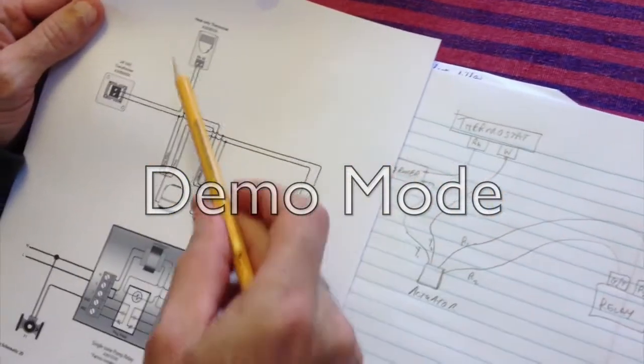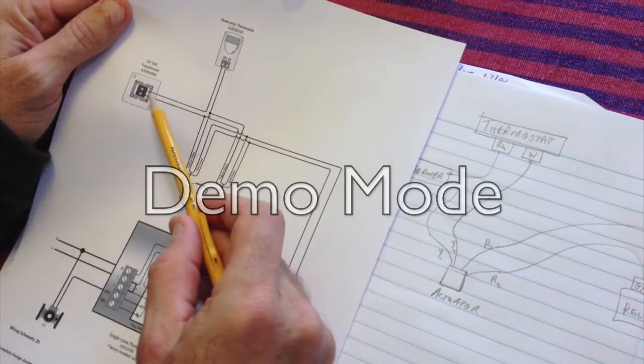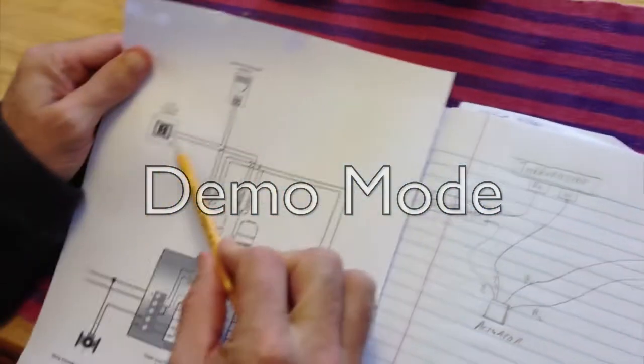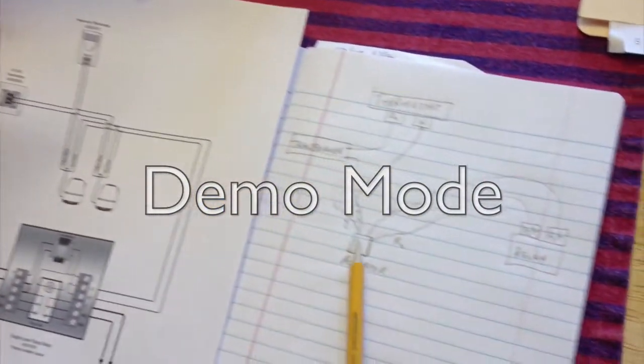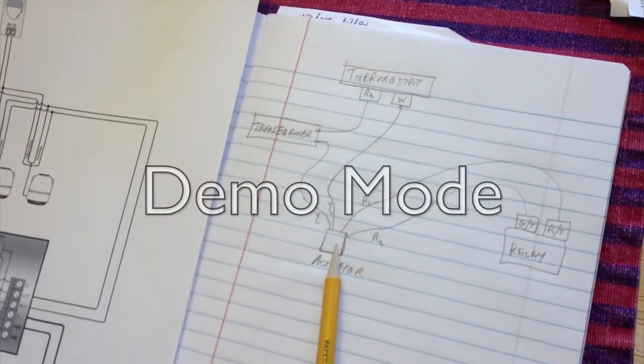from the thermostat, we have a wire that goes directly to the transformer, and we've got that. We have a wire that comes out of the transformer and goes and connects to a yellow wire, and that's this one here, going to the transformer.